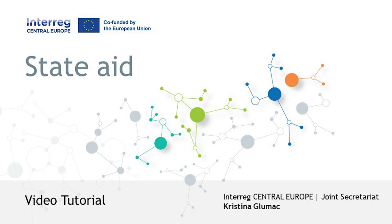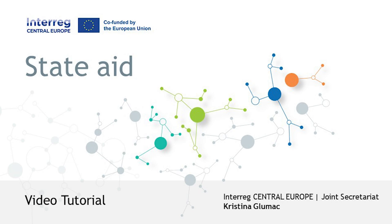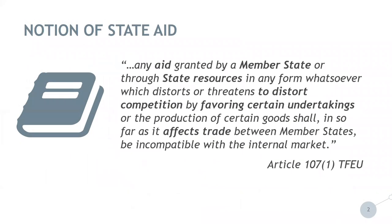Public support granted by the Transnational Cooperation Programme Interreg Central Europe must comply with the State Aid Rules of the European Union, which are applicable at the point in time when public support is granted, that is when the ERDF funds are granted to the project. Speaking about the State Aid regime and the applicable rules, it is the Treaty on the Functioning of the European Union, Article 107, which gives an answer to the question: when does State Aid occur?